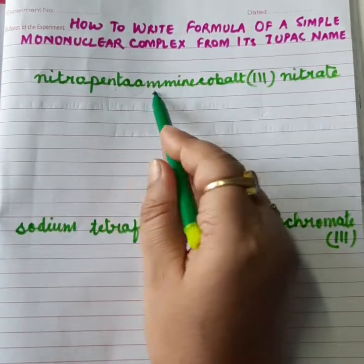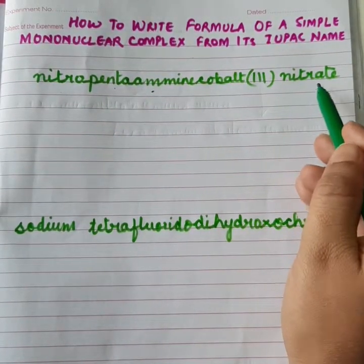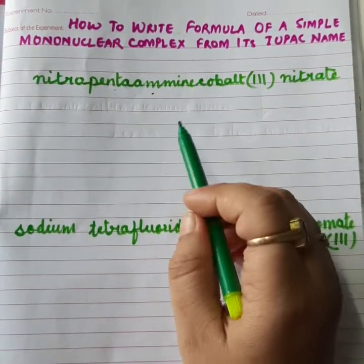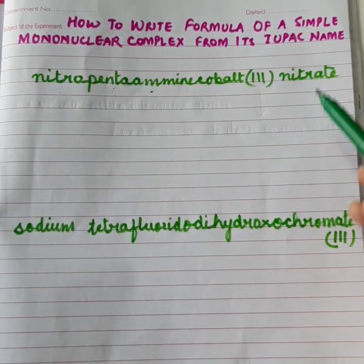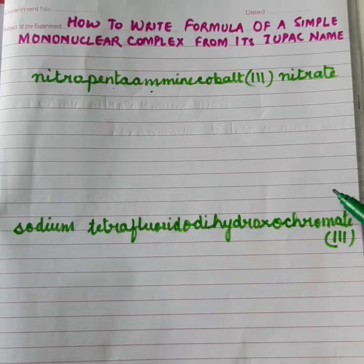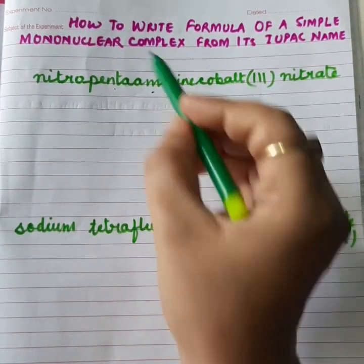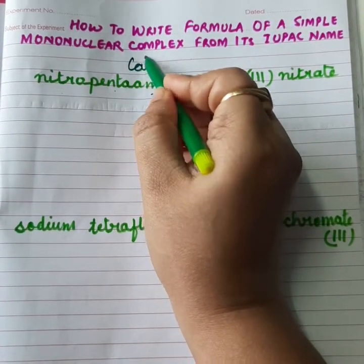The first one is nitro-penta-amine-cobalt(III) nitrate. By seeing the name itself, you come to know whether the complex is cationic or anionic. Like by seeing its name, you are coming to know that it is a cationic complex.